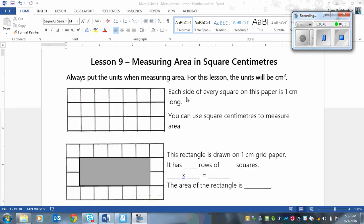Now, each side of every square on this paper, this right here, is one centimeter long. So if we go from here to there, that's one centimeter, and from here to here is one centimeter. Each side of it is one centimeter long.